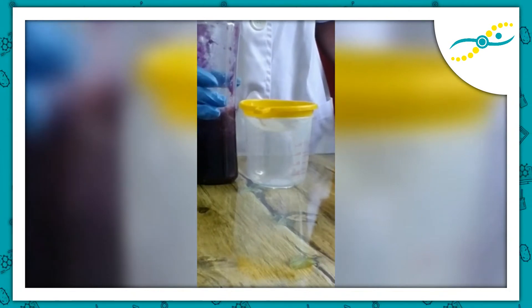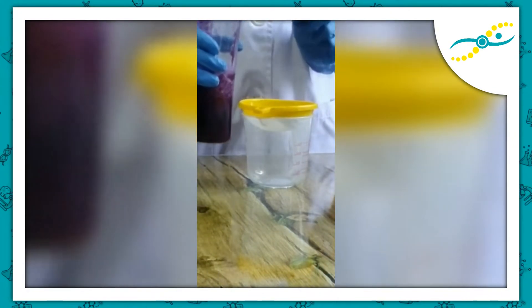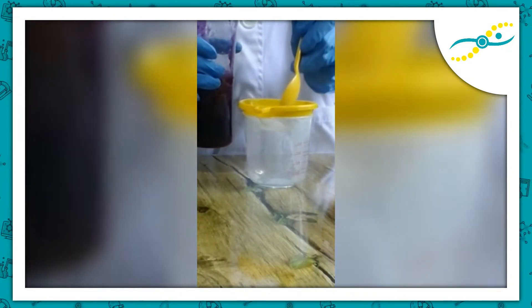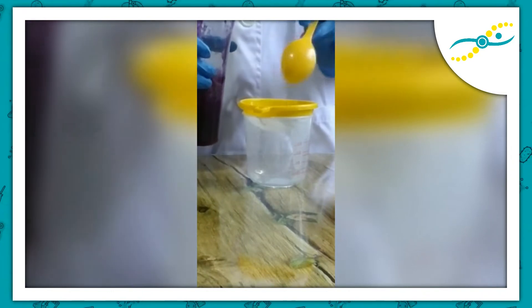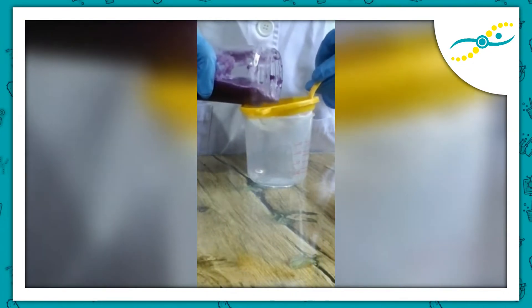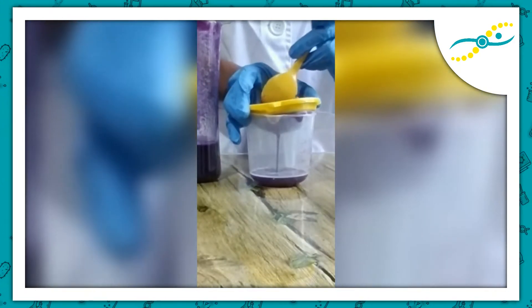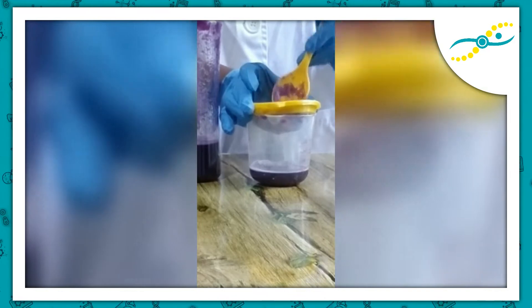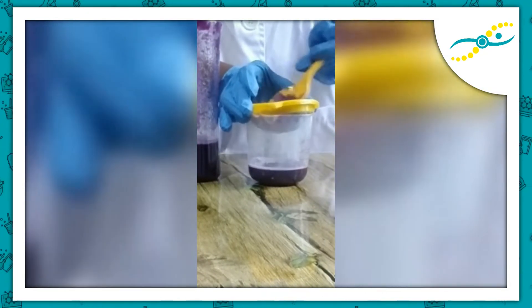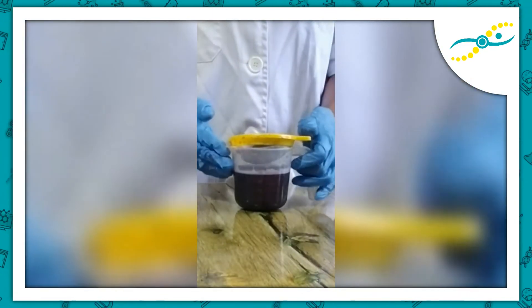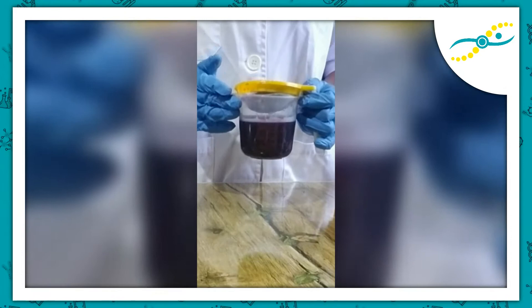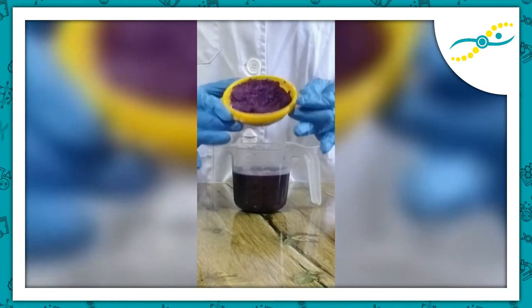We have successfully extracted the blended cabbage. Now what we need to do is extract the juice from the cabbage sediments, and we'll be doing that by using a straining device and a spoon to help speed the process. Here we have successfully obtained our cabbage juice — this is what the filtrate looks like.